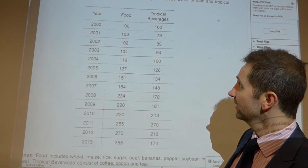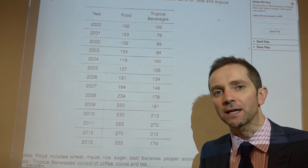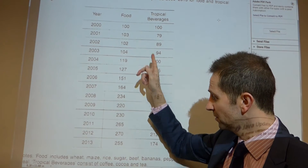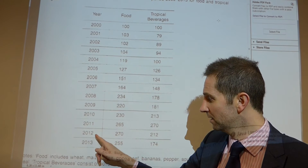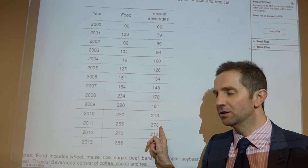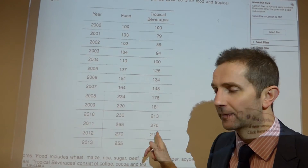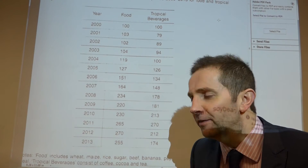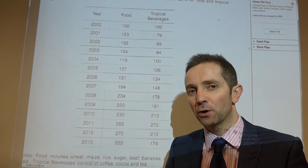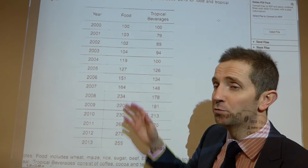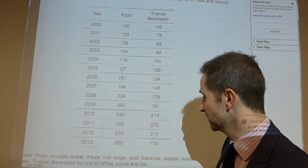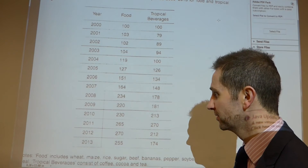Another thing you can see from this data set is that they both reached the same peak. Some candidates said that food beverage prices reached a peak of 270 in 2012, and then in the next sentence said tropical beverage prices reached a peak in 2011 at the same value. However, if you do not include a comparative statement — saying something along the lines of 'they both reach the same peak' rather than just listing each separately — you again do not get the comparative marks.